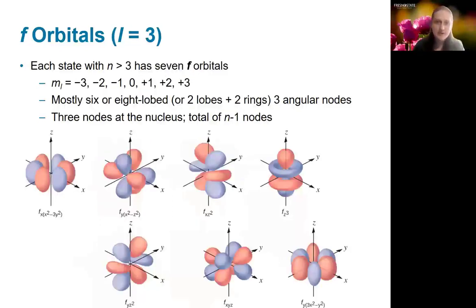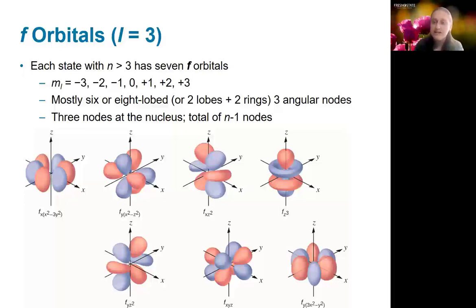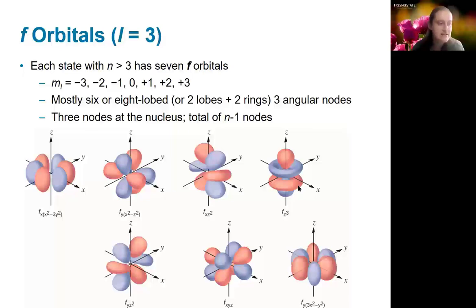The f orbitals are the most complicated ones we typically consider in chemistry. They have three angular nodes — three planes cutting through the nucleus. Typically they have six or eight lobes, although there is also one that is similar to the d orbital shape, with two donuts around it.